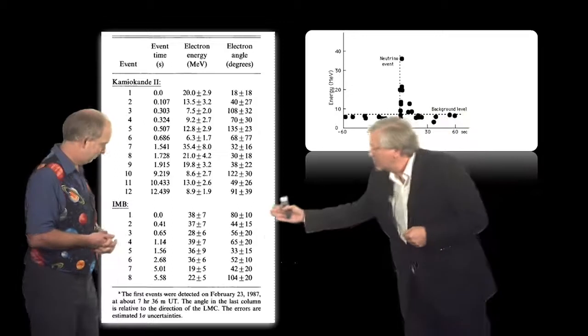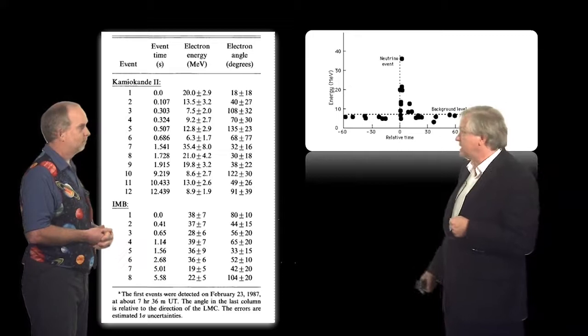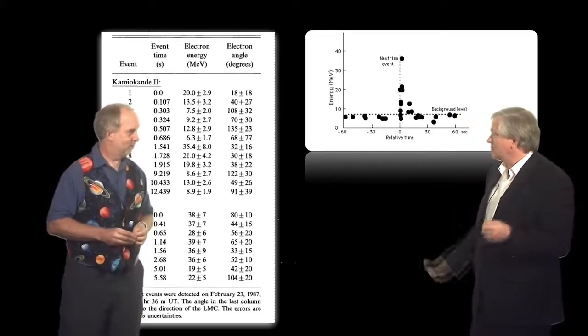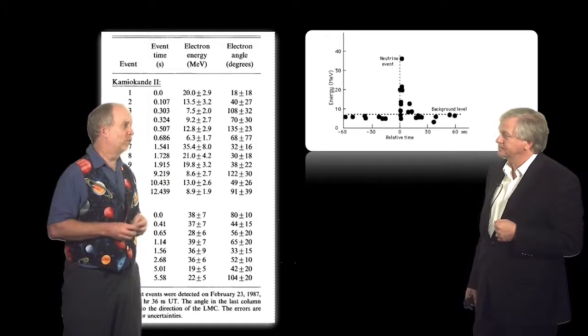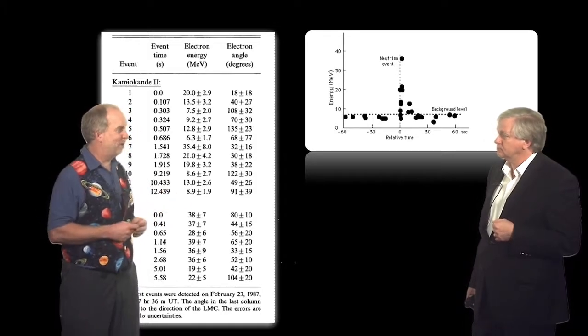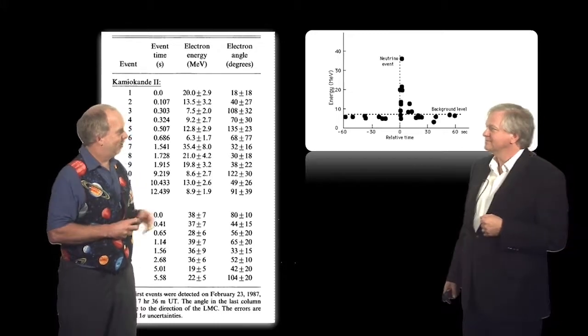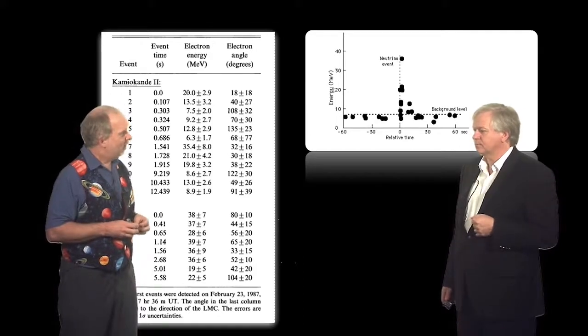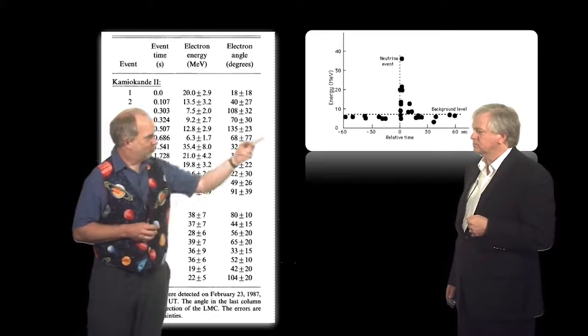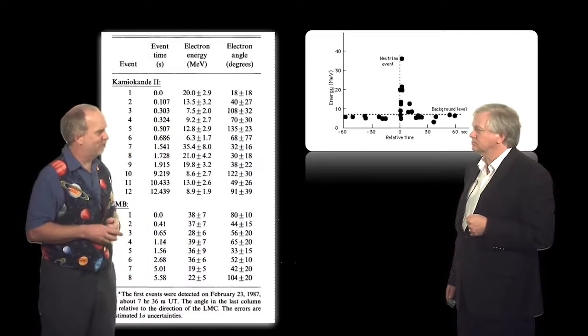There was also a detector in South Dakota of the United States that also detected eight events. So confirmation. Yeah, it's an interesting aside. There's also bragging rights in astronomy about how many photons you need to publish a paper. And this gravity wave would win because they've got thousands of papers and no detection of anything yet. But in this case, we've got 12 neutrinos and another eight. And how many papers would you say have been published based on those?